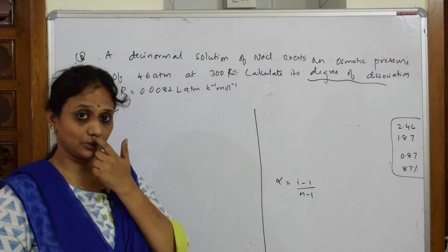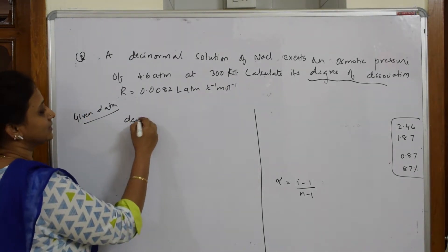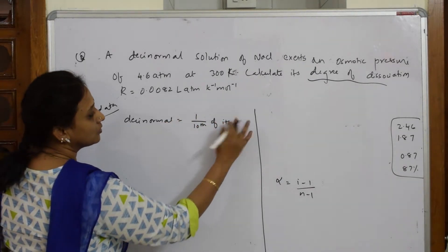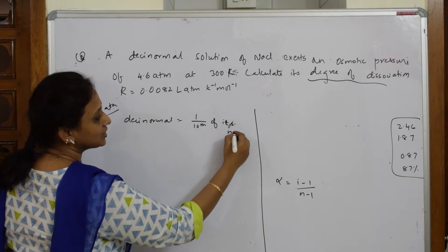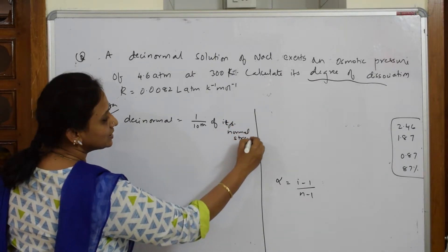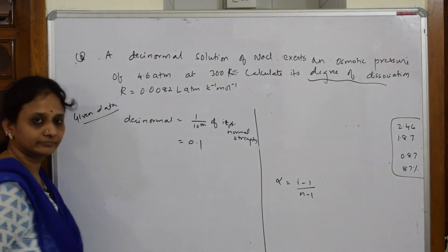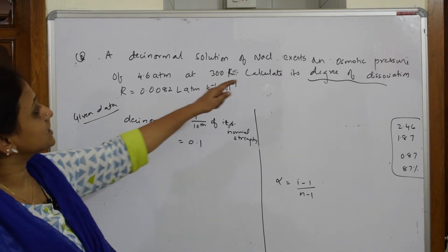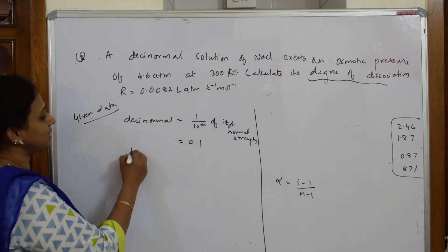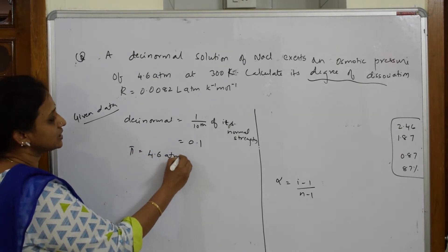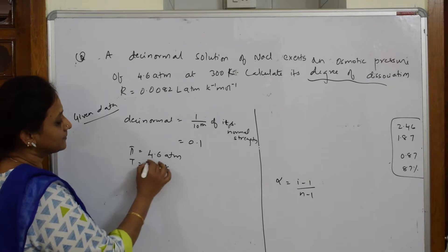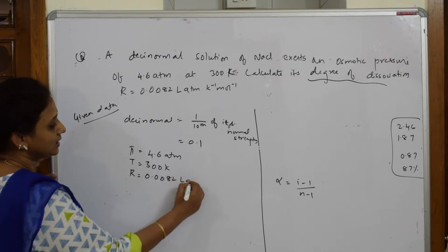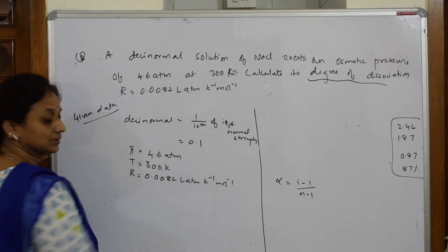A deci-normal solution of NaCl. What is deci-normal solution? Deci-normal solution means one-tenth of its normal strength. One-tenth of its normal strength, that is nothing but 0.1. So deci-normal solution. NaCl exerts an osmotic pressure, π is given to me, that is 4.6 atmospheres. Temperature given to me is 300 Kelvin. Calculate, it is alpha. R also is given to me, 0.0082 liter atmosphere Kelvin inverse mole inverse.